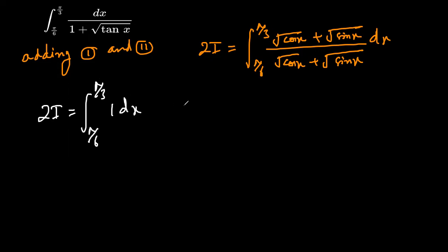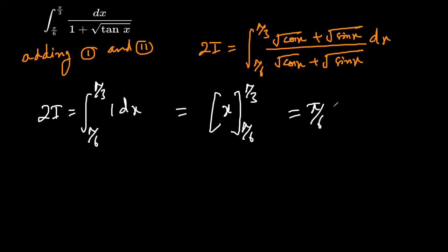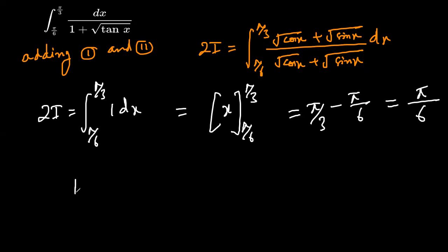The integration of 1 is x, evaluated from π/6 to π/3. Substituting the limits, we get π/3 minus π/6. Taking LCM, that is 2π/6 minus π/6, which equals π/6. So 2I = π/6, which means I = π/6 divided by 2, that is I = π/12.